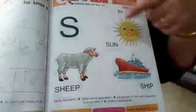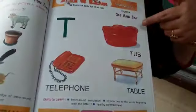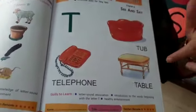S, sun, sheep, ship. Okay turn the page. T, tub, telephone, table.